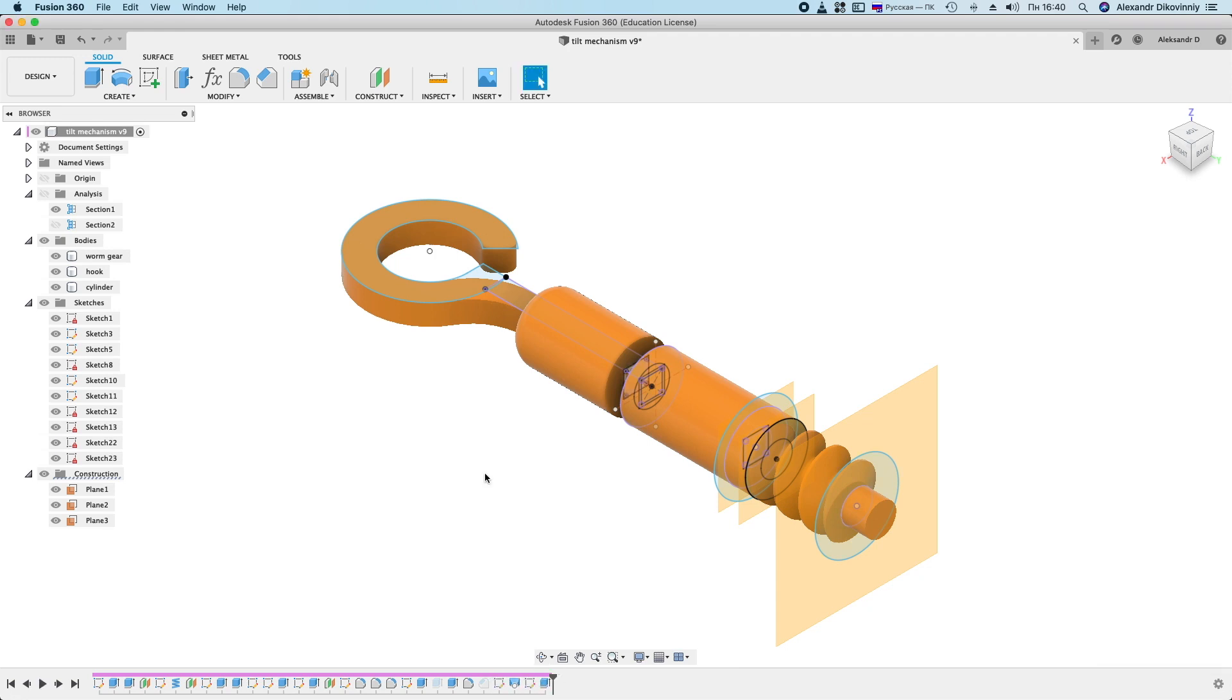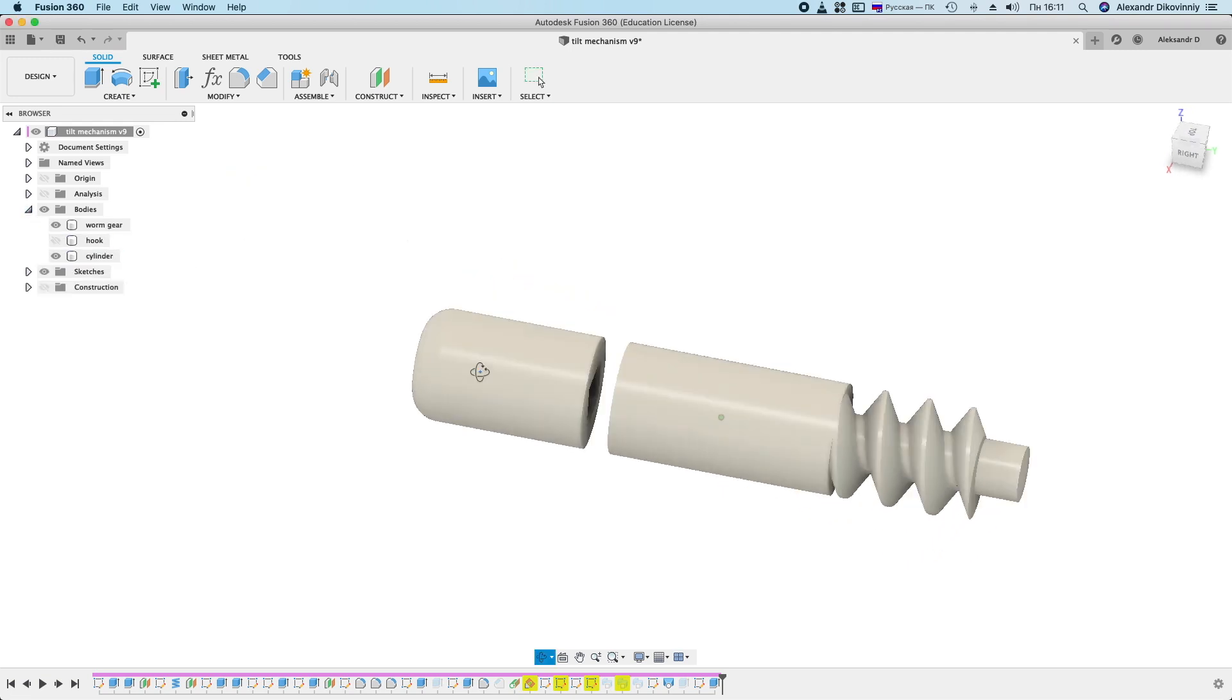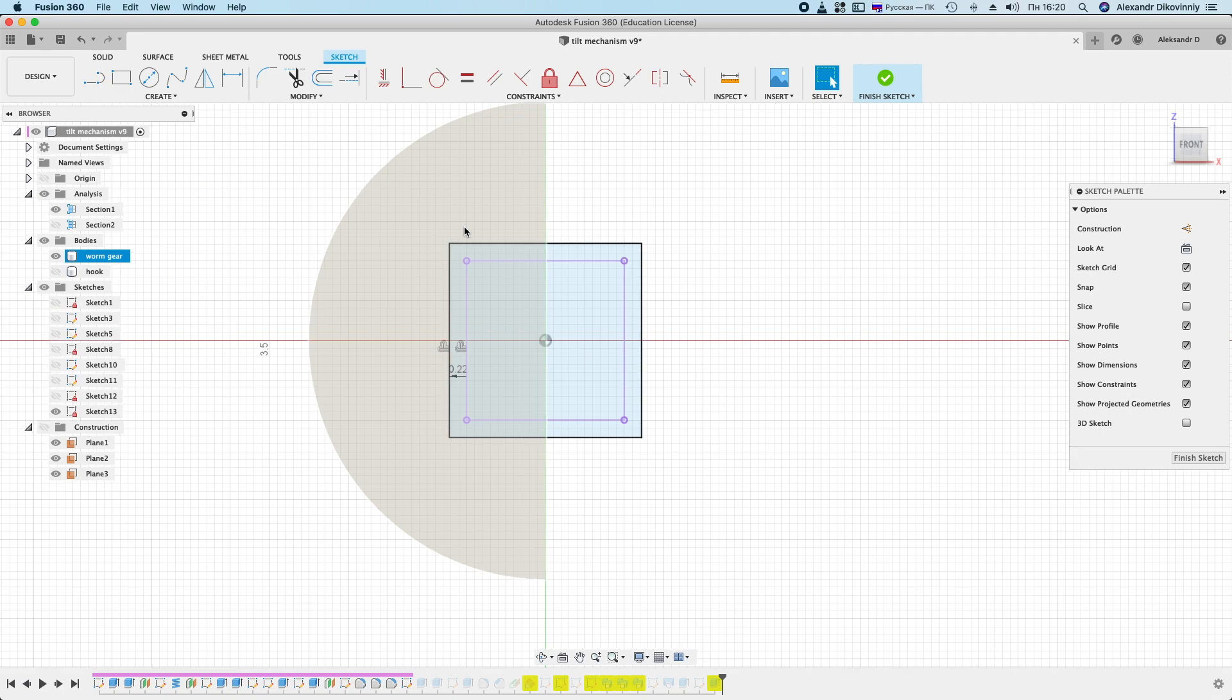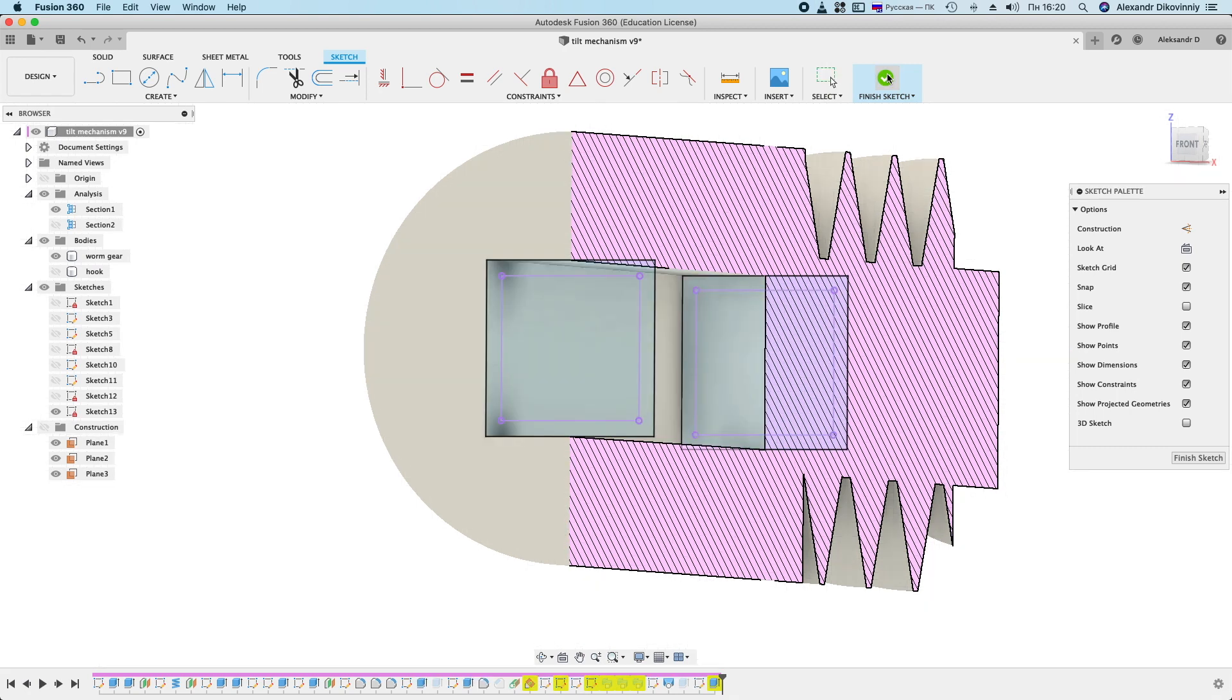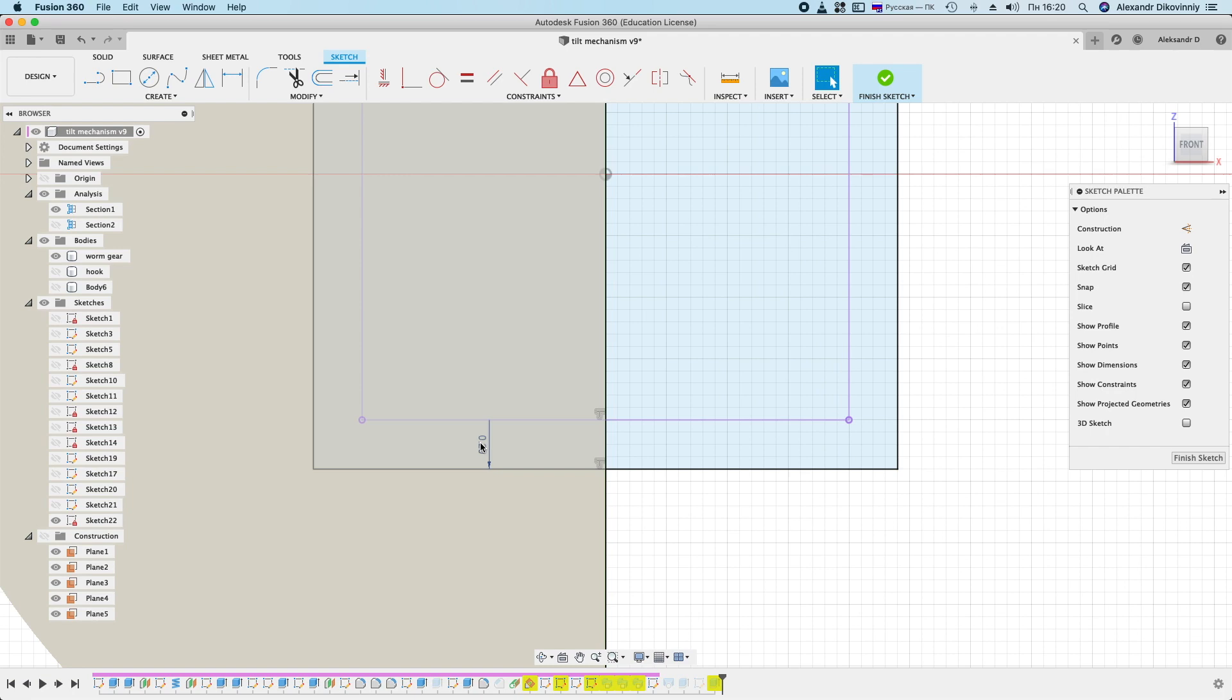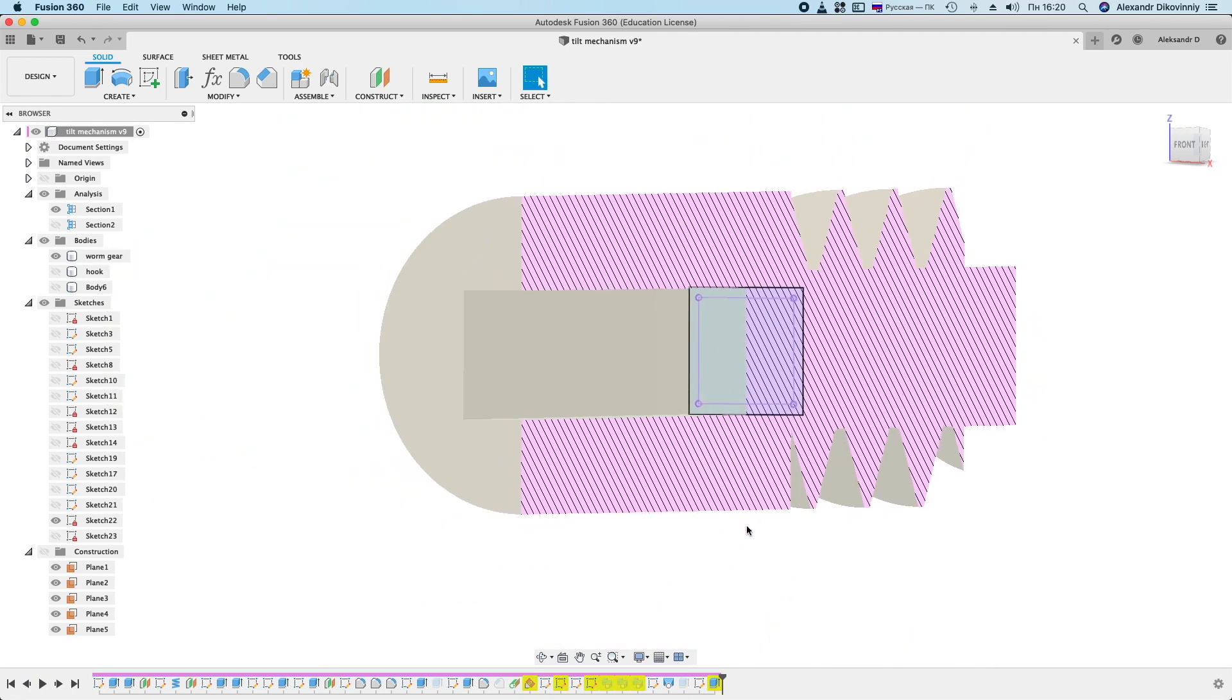The detail consists of three parts: hook, worm, and decorative cylinder. It is necessary that the parts are tightly inserted into each other. For the worm I made a smooth change in the size of the hole. First offset 0.22mm, and at the end of 0.2mm. Thus the hook should be securely fixed in the worm.